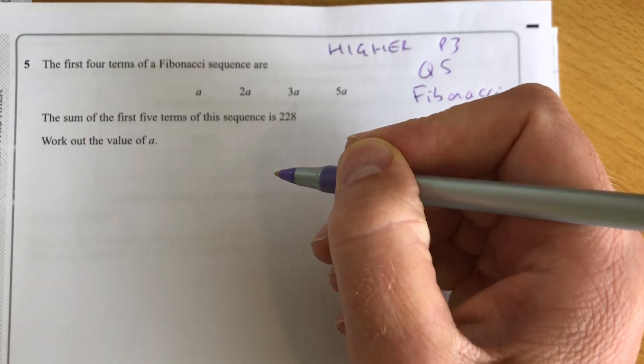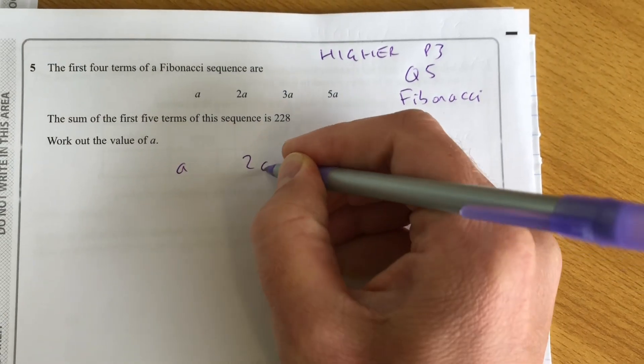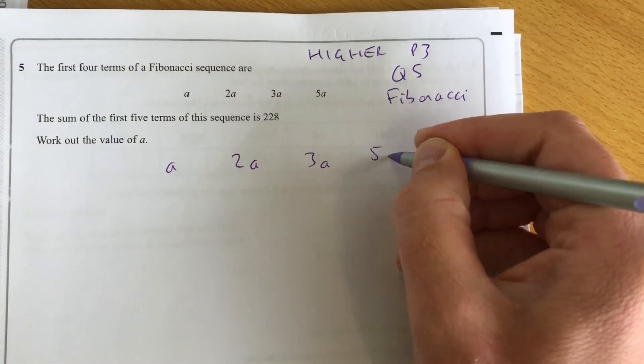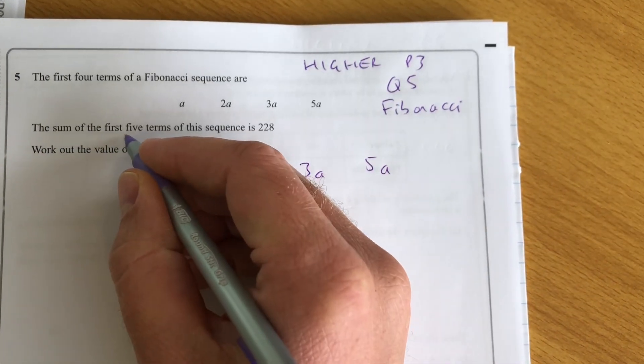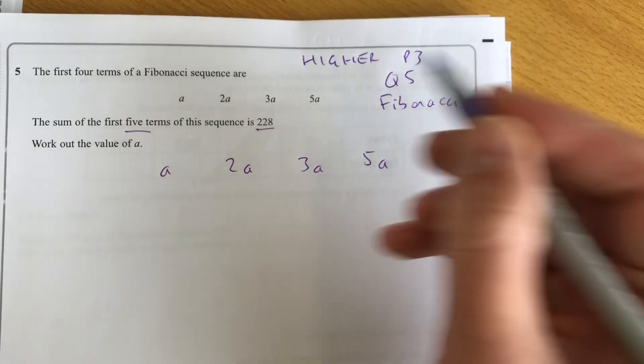So we have four terms here: A, 2A, 3A, and 5A. They've told us the sum of the first five is 228.